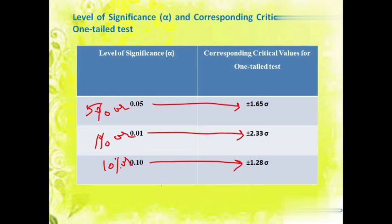I think now all of you must have understood the concept of critical value in case of two-tailed test and one-tailed test, and also the p-values in case of one-tailed upper or right-tailed, and one-tailed lower or left-tailed test. This session must have cleared all your doubts. Thank you.